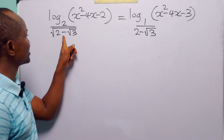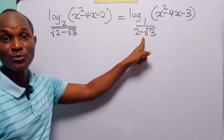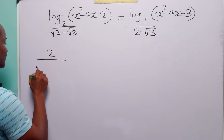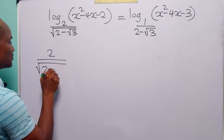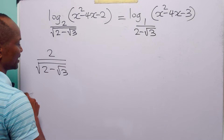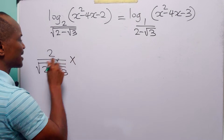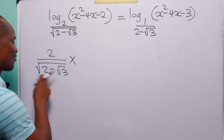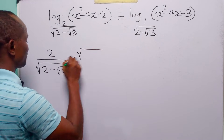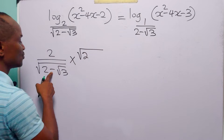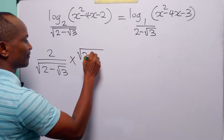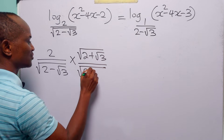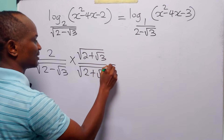To simplify, we rationalize the two bases. In this case we have 2 over the square root of 2 minus root 3. To rationalize this, we are going to multiply both the numerator and the denominator by the conjugate of the denominator, which is the square root of 2 plus root 3, over the square root of 2 plus root 3.